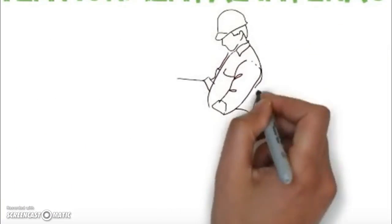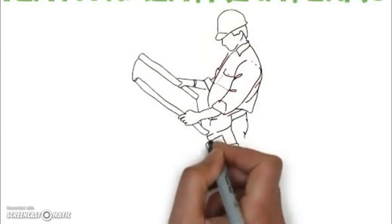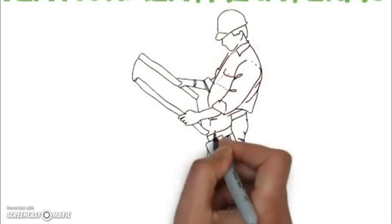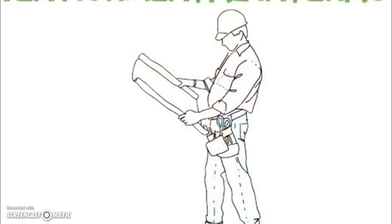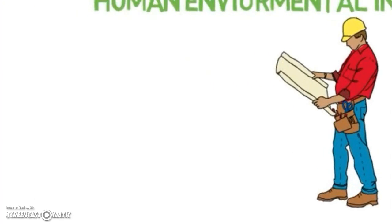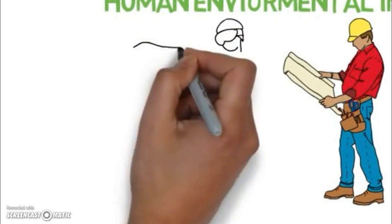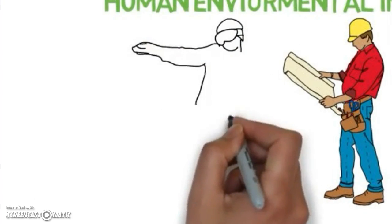The next is Human-Environment Interactions. A spatial perspective invites consideration of the relationship between humans and the physical world. Asking locational questions often means looking at the reciprocal relationships between humans and their environments.